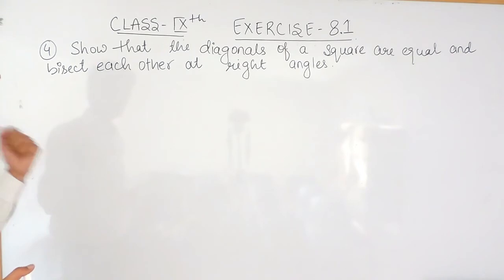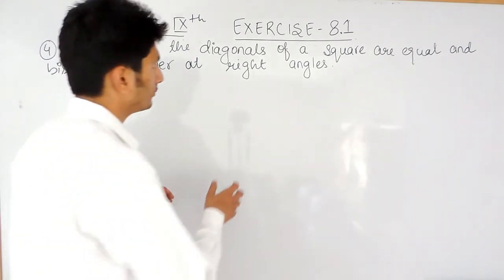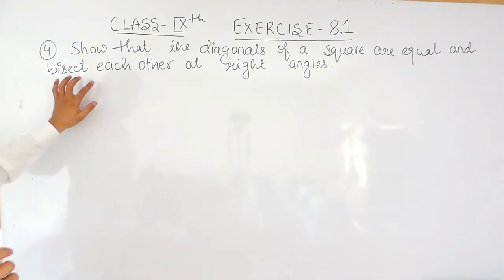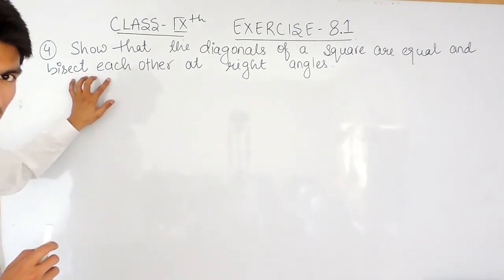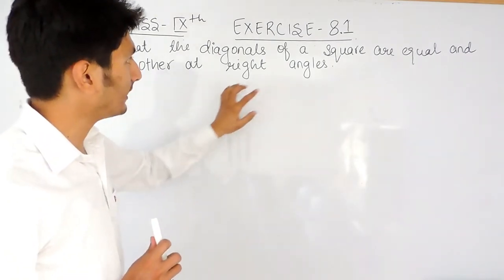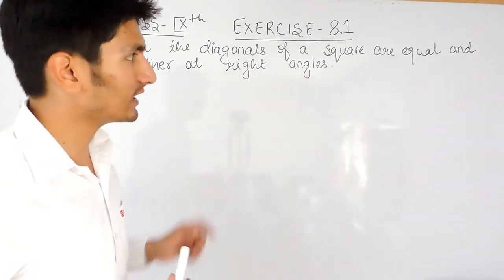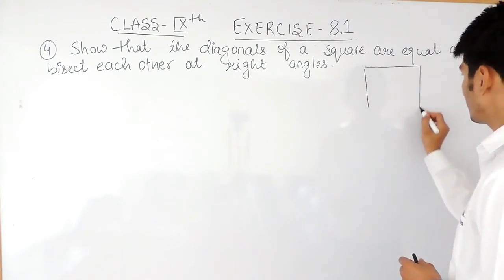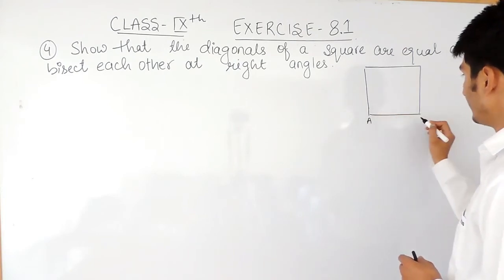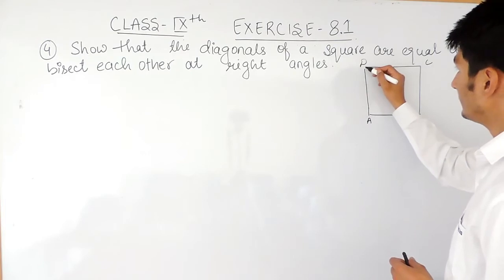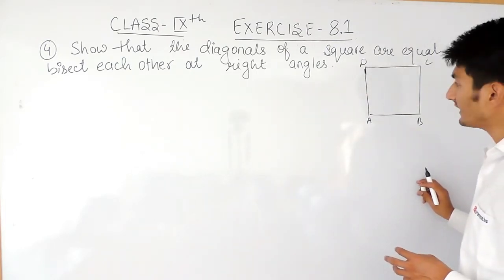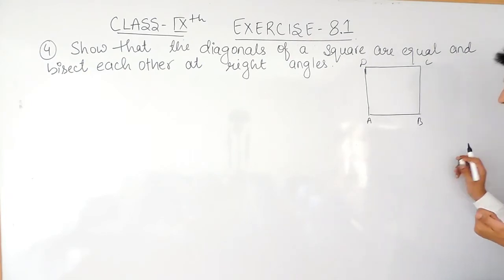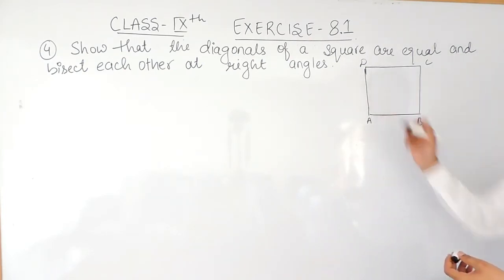There are three parts to this question. The first is to prove that the diagonals of a square are equal. Second, the diagonals of a square bisect each other. And the third, the diagonals of a square bisect at right angles. Now ABCD is a square, and we know that a square is a closed four-sided figure where all four sides are of equal length and all angles are 90 degrees.